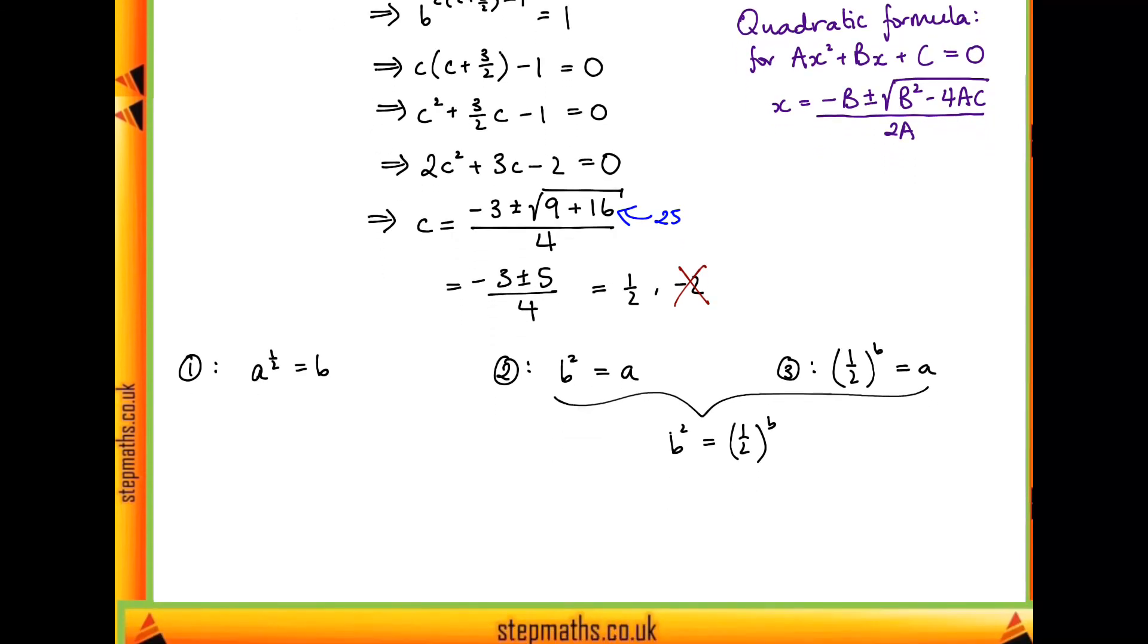We can look at this graphically instead. So we know how to draw b squared, and we can also draw a half to the b. If we treat our a like we normally would y, and our b like we normally would x, then this is just a normal quadratic. It would look just like this. I've only considered this first quadrant here because we know that a and b have to be positive. So that's what a equals b squared would look like. And a equals a half to the power of b would just decay away like this. We want values of a and b which work for both equations. So we're basically looking for the intersection. We see there is only one intersection, which means there is a unique solution for a and b.